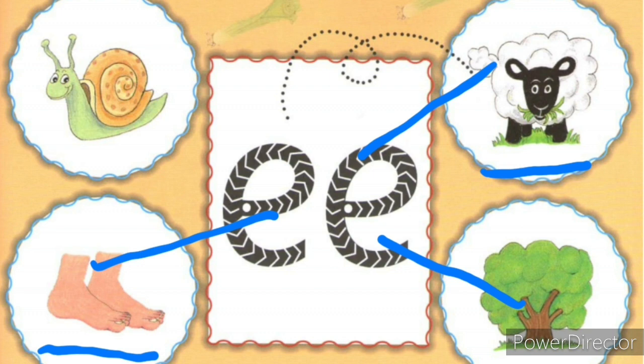Let us move on to the next picture children. What is that? That's a snail. Can you hear the 'ee' sound in the picture? Snail. No, we don't. So we are not going to match it to 'ee'.